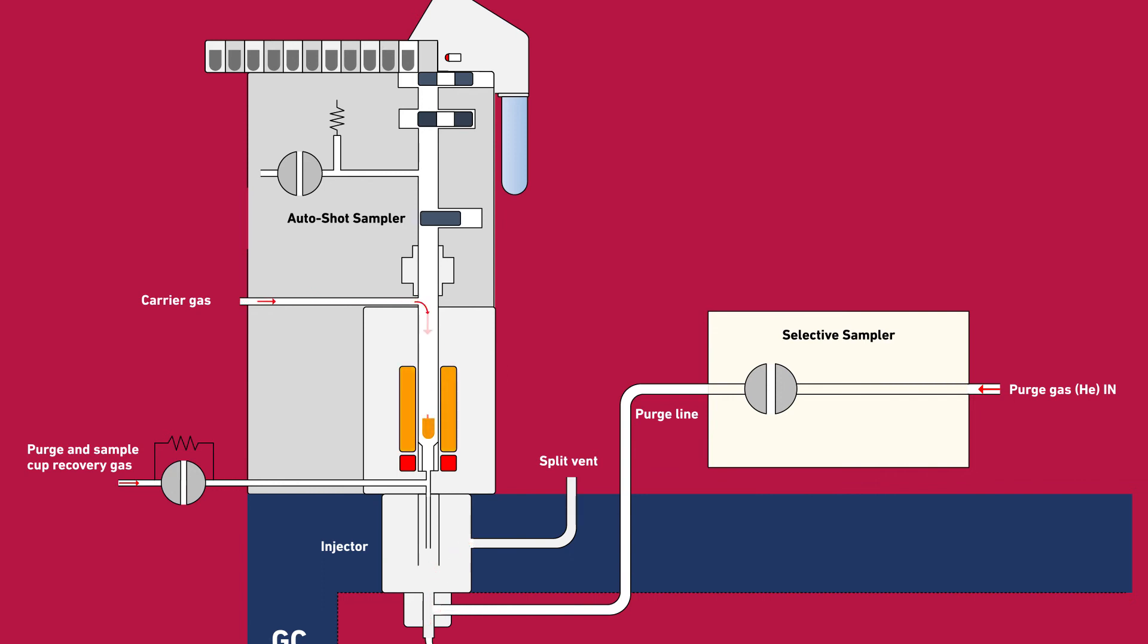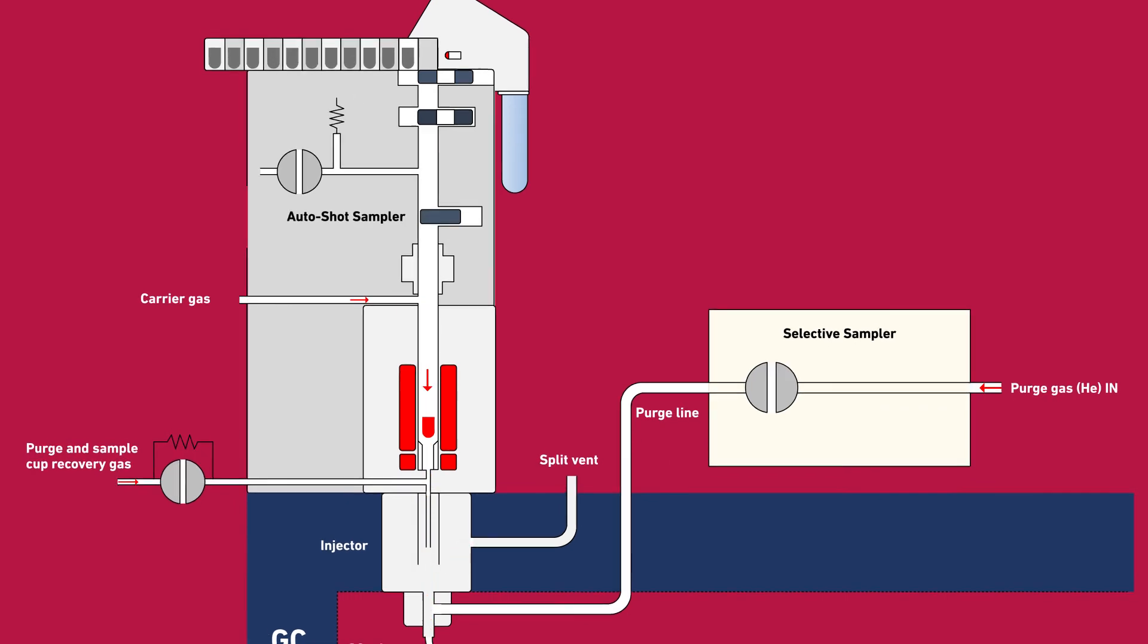When the microfurnace reaches the set temperature for zone B, the sample cup drops into the furnace again. The microfurnace heats up to 220 degrees Celsius. Since we want to analyze this zone, desorbed compounds are trapped at the head of the column using the microjet cryo trap.